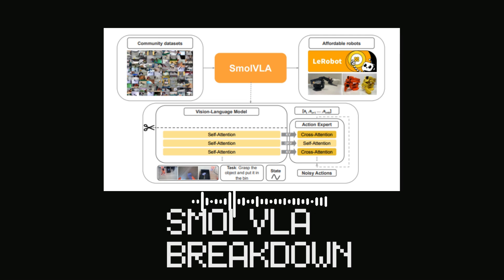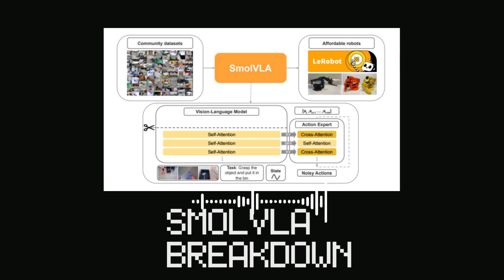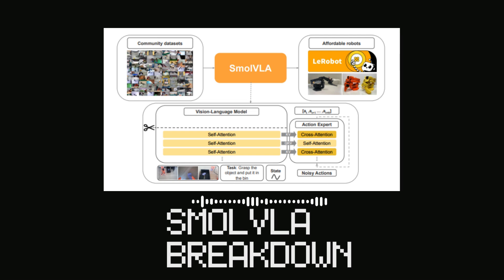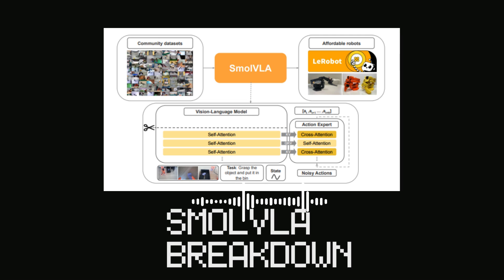They really thought through every detail to make it not just efficient, but highly effective and robust — a significant step forward for making robotics more practical for everyone. To bring it back to the community-driven aspect, they pre-trained SmolVLA on a subset of 481 community datasets from Hugging Face — a total of 22,900 episodes and 10.6 million frames. That's a testament to the power of open collaboration in AI. SmolVLA isn't just a technical breakthrough; it's also a model for how future AI development can be more inclusive and accessible, leveraging collective effort rather than massive closed-off projects.